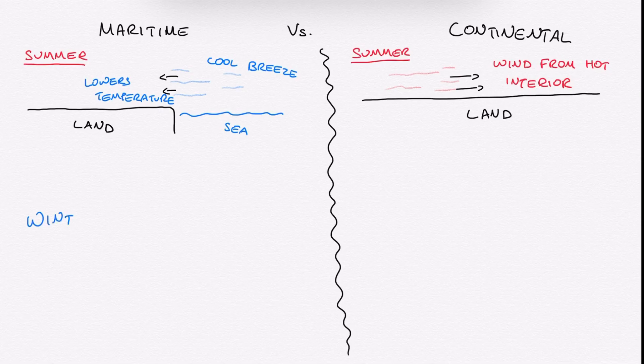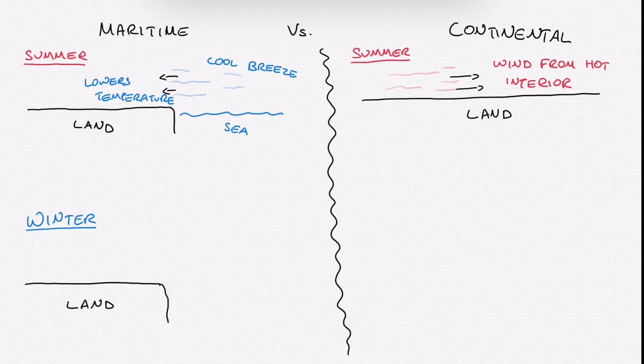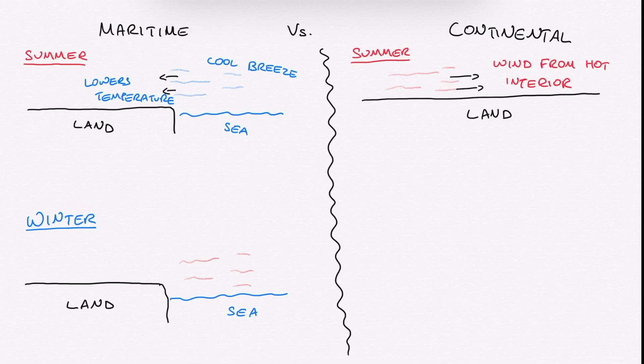In winter, the opposite happens. The sea retains heat much better than land does. It stores heat inside of it. And therefore, in winter, any breeze that comes from the sea is likely to be relatively warm and moist, making sure that the land by the sea doesn't freeze that much.